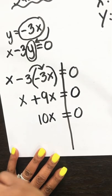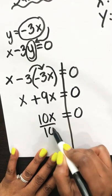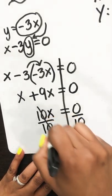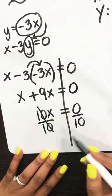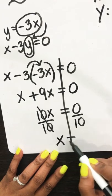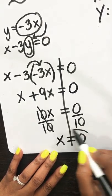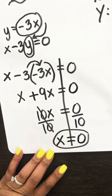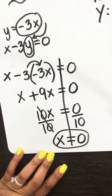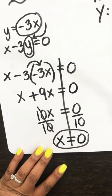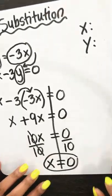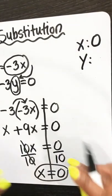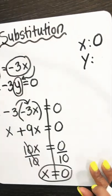Now we want to divide both sides by 10. The 10s cancel out, leaving x by itself, and 0 divided by 10 is 0. So we have found our x. We're halfway to our goal — remember, our goal is to find x and y. We found x, which is 0. Now we want to go ahead and find y.